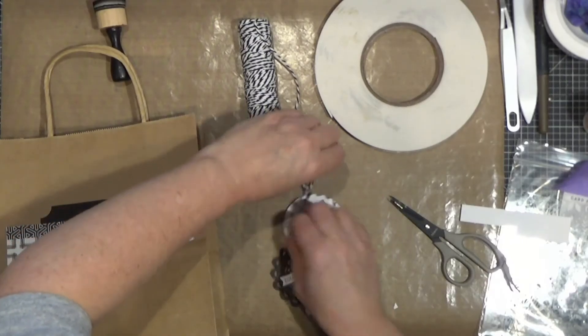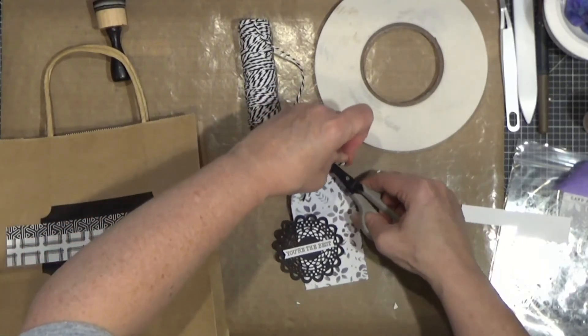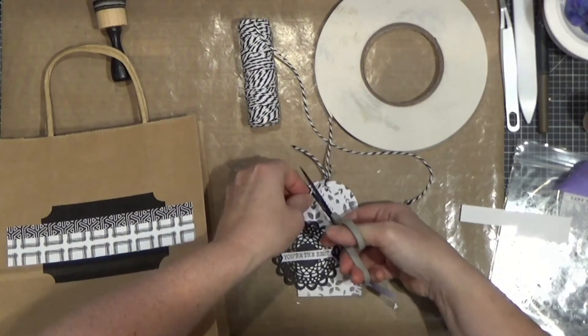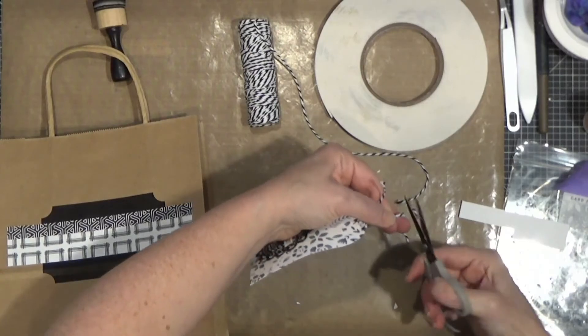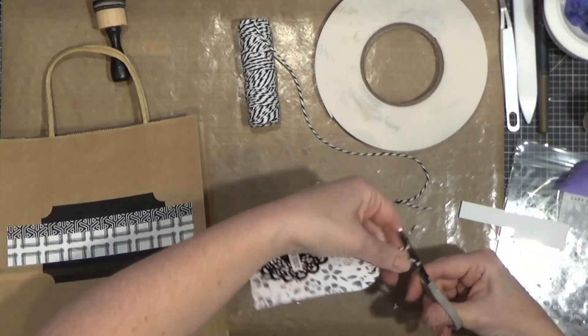You wouldn't have to put the twine on, but I don't know. I think it makes it look a little more finished when you have a little something going through that hole on the tag. I'm going to trim off a little bit of this.